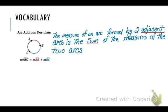So two arcs that are right next to each other, if you add them together, you're going to get the big arc. So in our example that we have here, we have the measure of arc ABC equals the measure of minor arc AB plus the measure of minor arc BC.